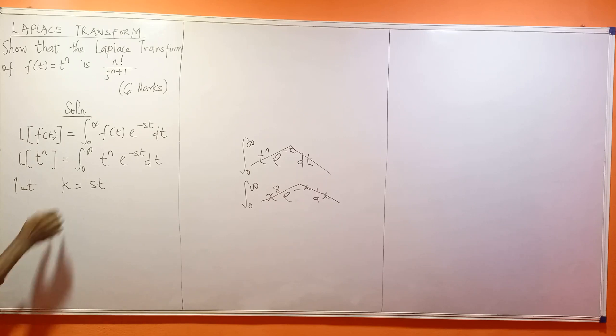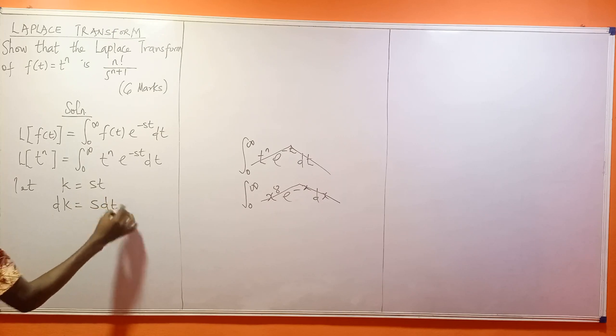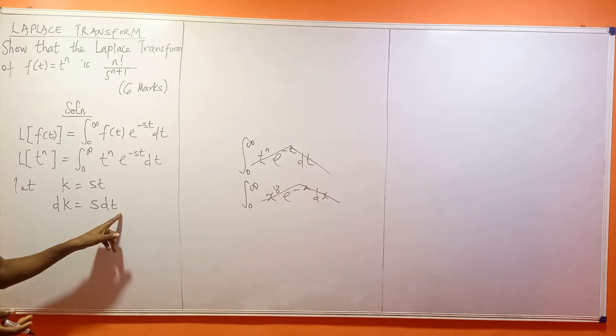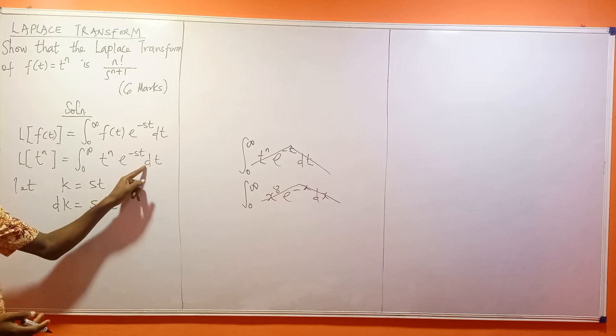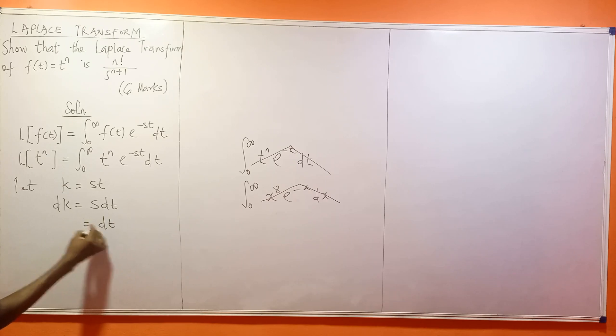If k = st, then differentiating with respect to t gives dk = s dt. Since I need dt, I rearrange to get dt = dk/s.